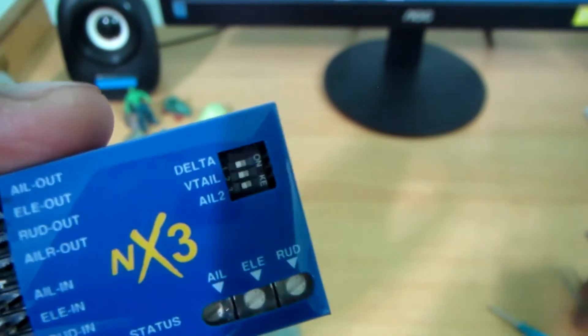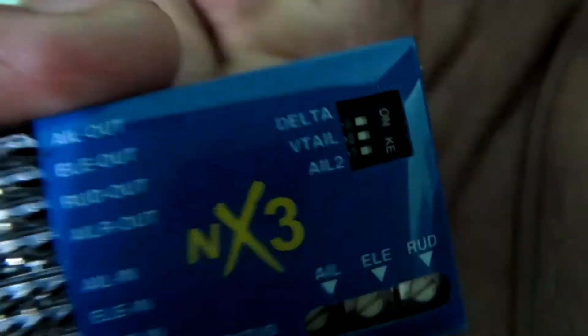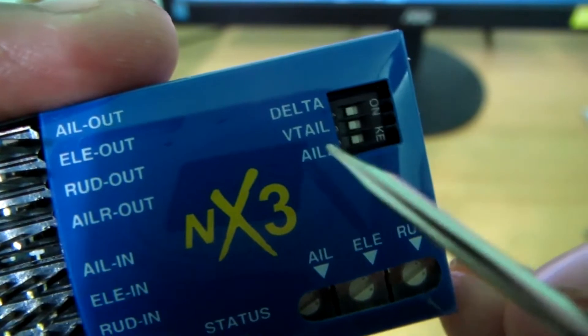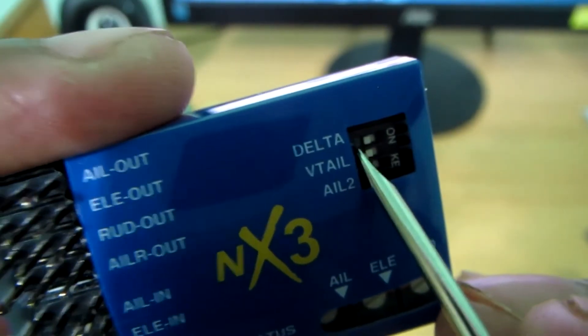This is the protector. And now you can access these switches. I'm gonna use this in a V-tail model, so I just turn on the V-tail mode.